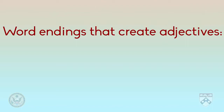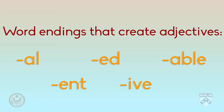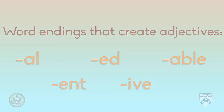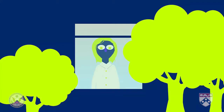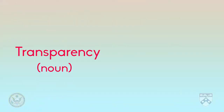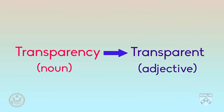Let's take a look at the adjective word endings: A-L, E-D, A-B-L-E, E-N-T, and I-V-E. In our first example, verified can be used as an adjective. Now let's look at transparency and transparent. Words ending in C-Y tell us that this is a noun. Transparency is important because the reader needs to understand the journalist's process to trust their story. When we want to change the word form from a noun to an adjective, we take away the C-Y ending and replace it with T. Now I can say the journalist's process was transparent.